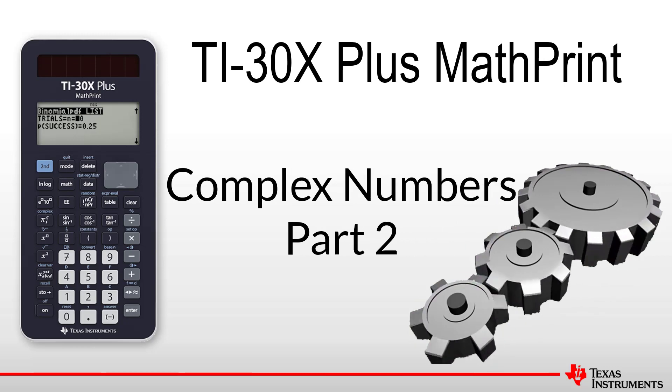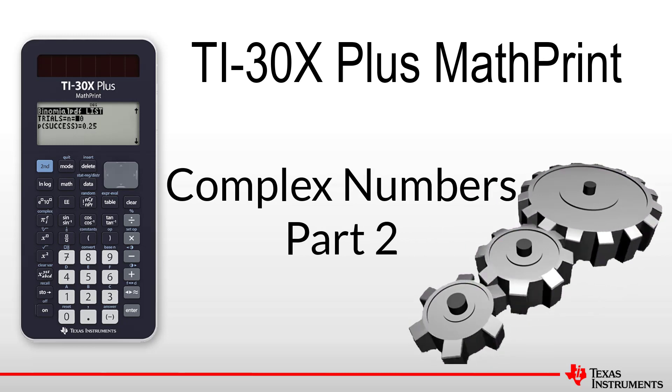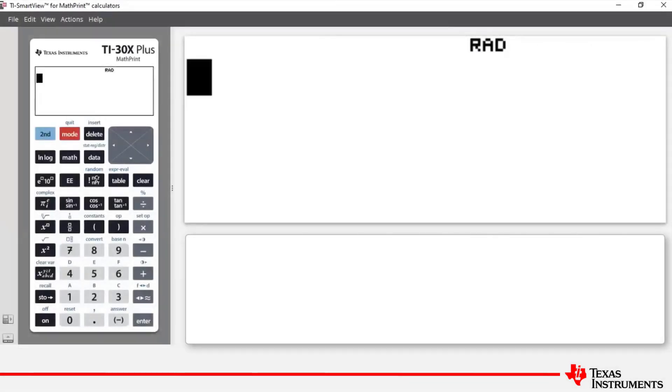Welcome to another lesson in the TI-30X Plus MathPrint student course. In this lesson, we show how to convert a complex number from Cartesian form to modulus argument or polar form. Remembering that Cartesian form z equals x plus yi and modulus argument form z equals re to the iθ.